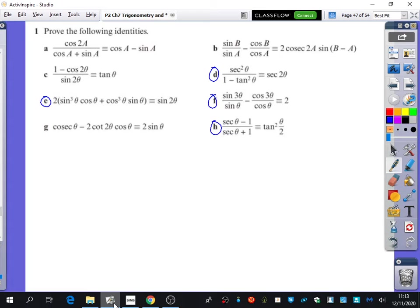So we're going to start by doing these questions that you've selected from question one, and then we're going to do some things from the mixed exercise. So for question D that we've got here, we have sec squared theta over 1 minus tan squared theta, and we're going to try and show that it's equal to sec 2 theta.